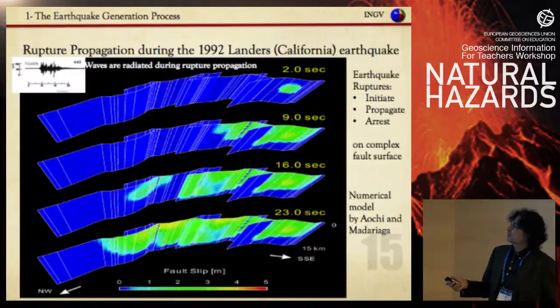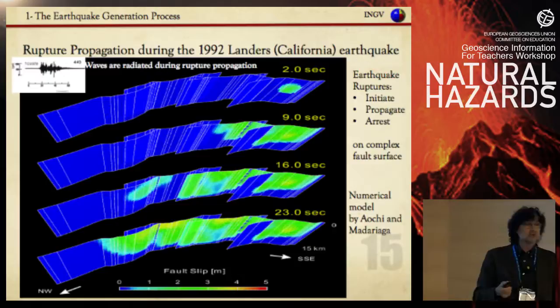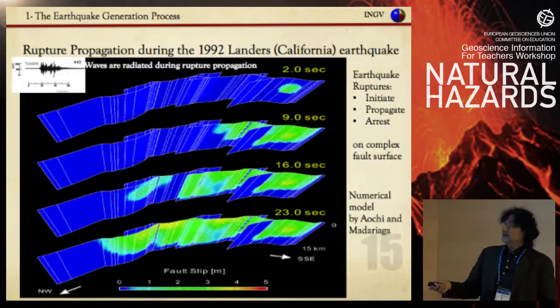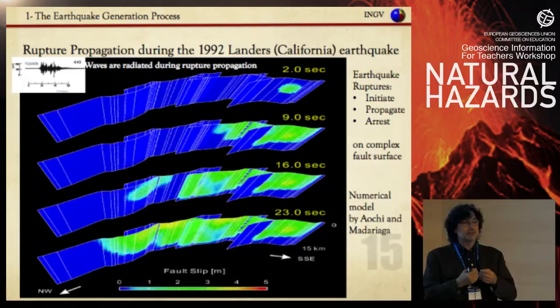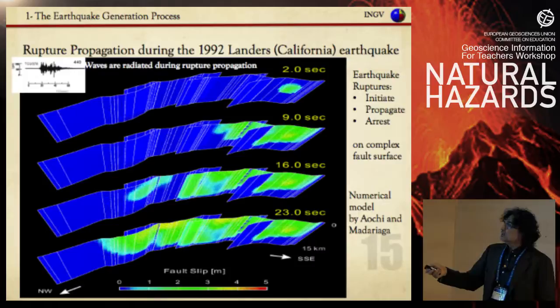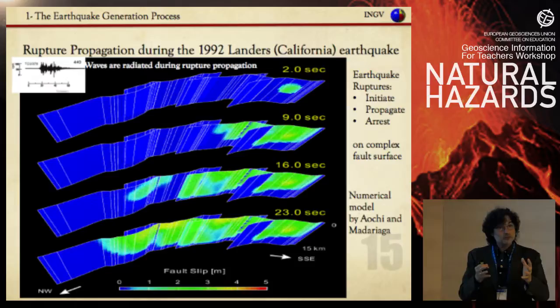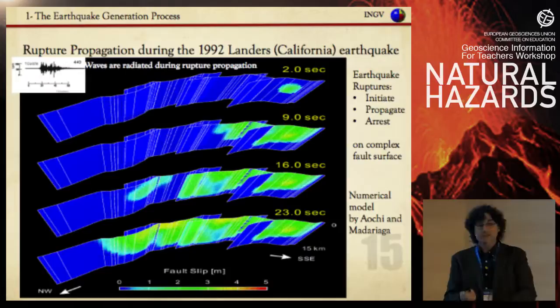This is a simulation of rupture propagation: at 2, 9, 16, 20 seconds and half a minute to generate a magnitude 7 earthquake over 60 kilometers of length in less than a minute. The rupture starts, propagates onto another fault, propagates further, then arrests. It is also difficult for us to understand how long the fault will be and how big the earthquake will be. The seismic waveforms are radiated during propagation — the earthquake depends on how the fracture propagates, not how it initiates.